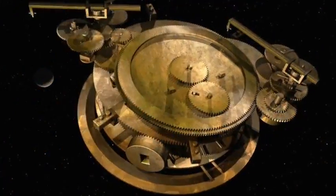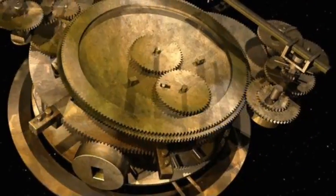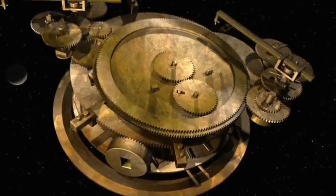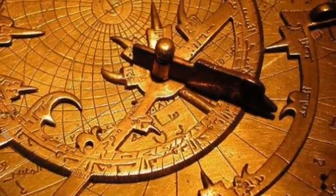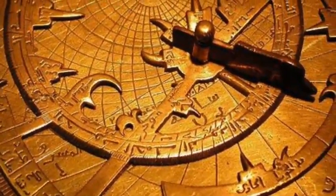By turning a hand crank, the user could move forward or backward in time. The crank made the gears move and rotate a series of dials and rings on which there are inscriptions and annotations of Greek zodiac signs and Egyptian calendar days.